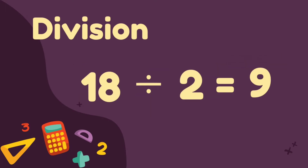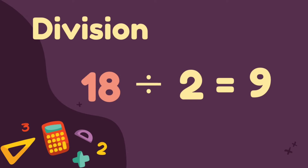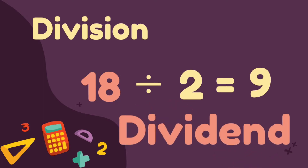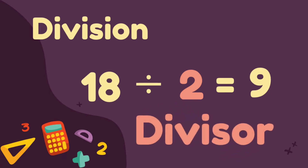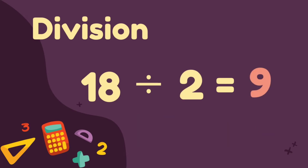Let's have this equation. 18 divided by 2 is equal to 9. Remember, when dividing numbers, the number that is being divided is called dividend. The number which shows how many groups the dividend will be divided into is called divisor. And finally, the number that you end up with is called quotient.